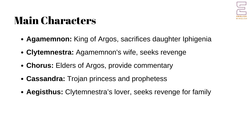Main Characters. Agamemnon, the king of Argos and commander of the Greek armies during the Trojan War. Despite his heroic status, his willingness to sacrifice his daughter and his arrogance contribute to his downfall. Clytemnestra, the protagonist of the play, is Agamemnon's wife and has ruled Argos in his absence. Driven by revenge for her daughter Iphigenia's sacrifice, she is determined and ruthless in her actions.